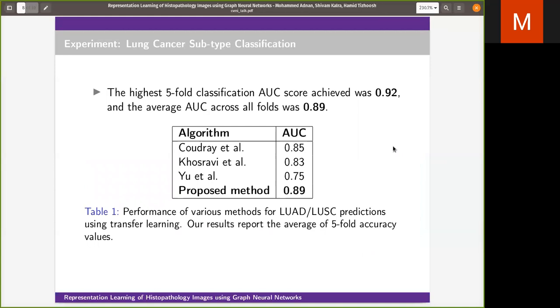LUAD and LUSC are the most common types of lung cancer, which account for about 60 to 70% of cases. We achieved the highest AUC value of 0.92 and the average AUC across all folds was 0.89.